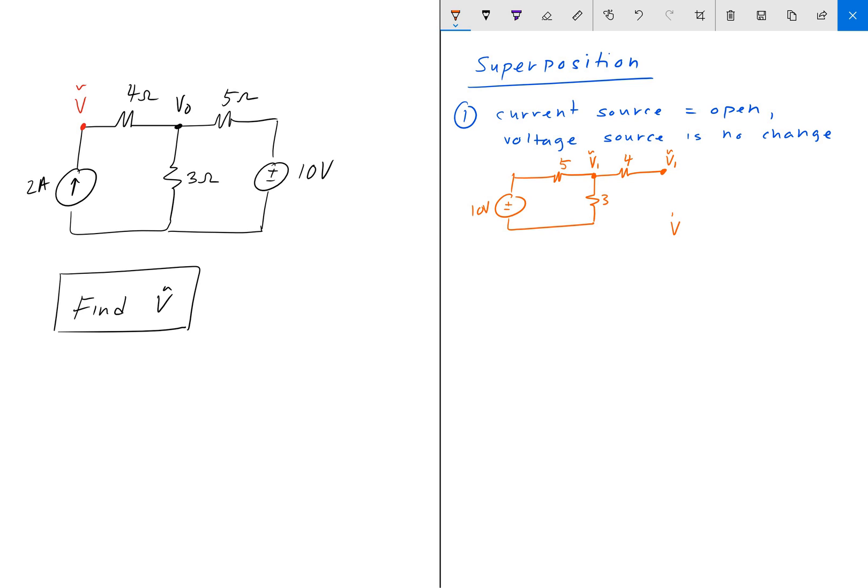So V tilde 1 is equal to 3 over 3 plus 5 times 10 volts. And that gives us 3.75 volts. Okay, so that's V1 tilde.